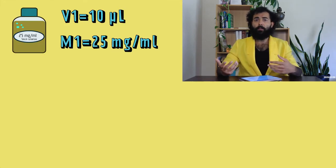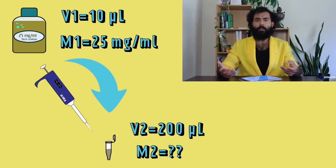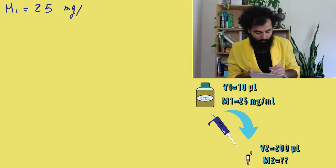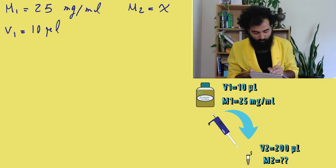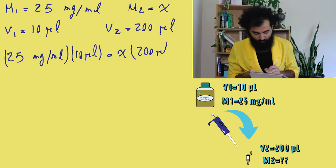Let's say what you don't know is your final concentration. For example, you took 10 microliter of a 25 mix-per-mil solution and diluted it to 200 microliters. What is the concentration of your 200 microliter solution? So, M1 equals 25 mix-per-mil, M2 equals X, V1 equals 10 microliters, and V2 equals 200 microliters. And we get 1.25 mix-per-mil.